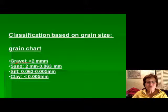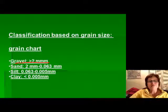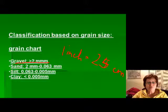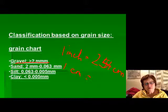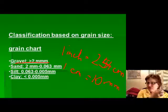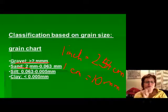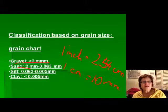Here is the grain size chart you need to know. Gravel has grains larger than 2 millimeters. Sand has grains between 2 millimeters and 0.063 millimeters. Silt has grains between 0.063 and 0.005 millimeters.